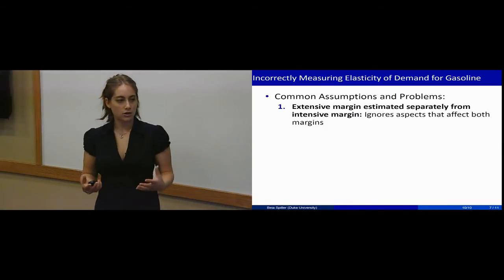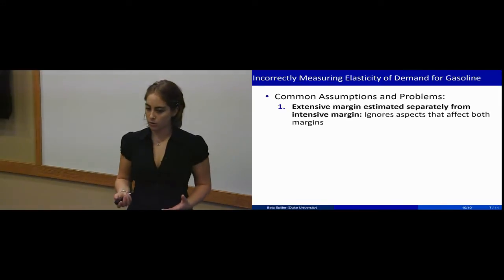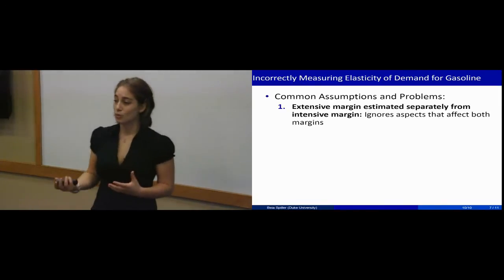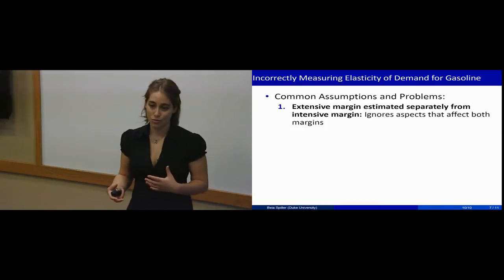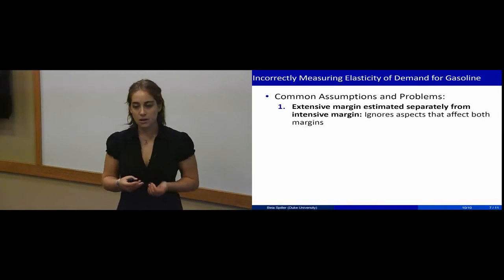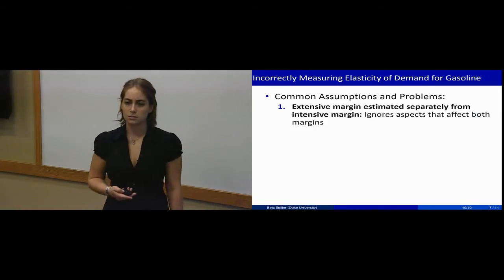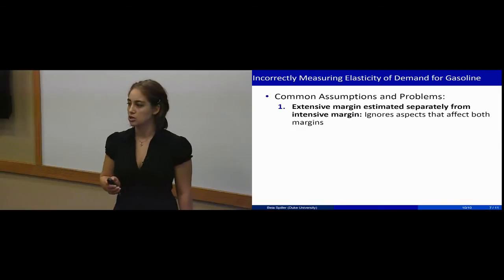The idea here is that if you have a very long commute time, you're probably going to buy a more comfortable car. And at the same time, if you have a more comfortable car, you're probably going to be induced to drive it more. So these two margins are affecting the individual at the exact same time, and if we estimate them separately, we're going to misestimate how individuals respond to changing gasoline prices.